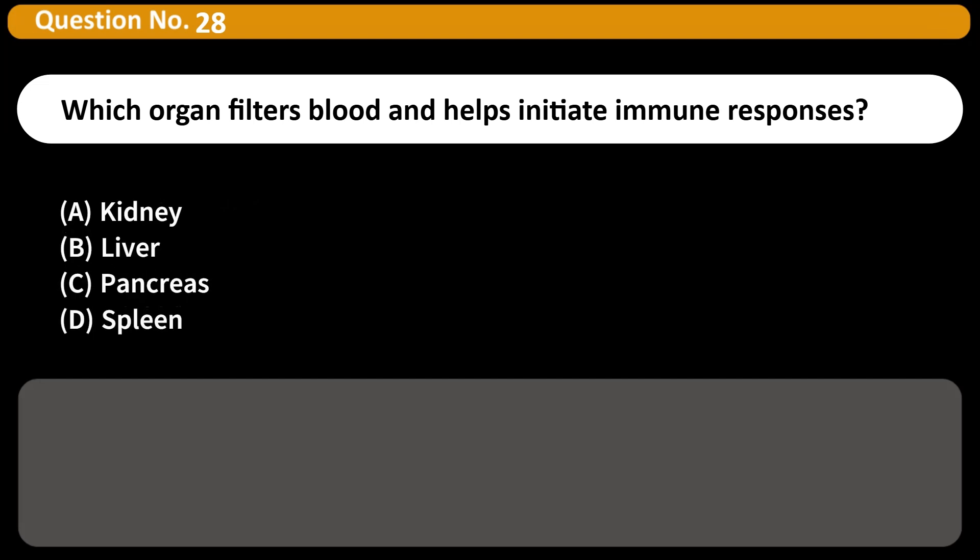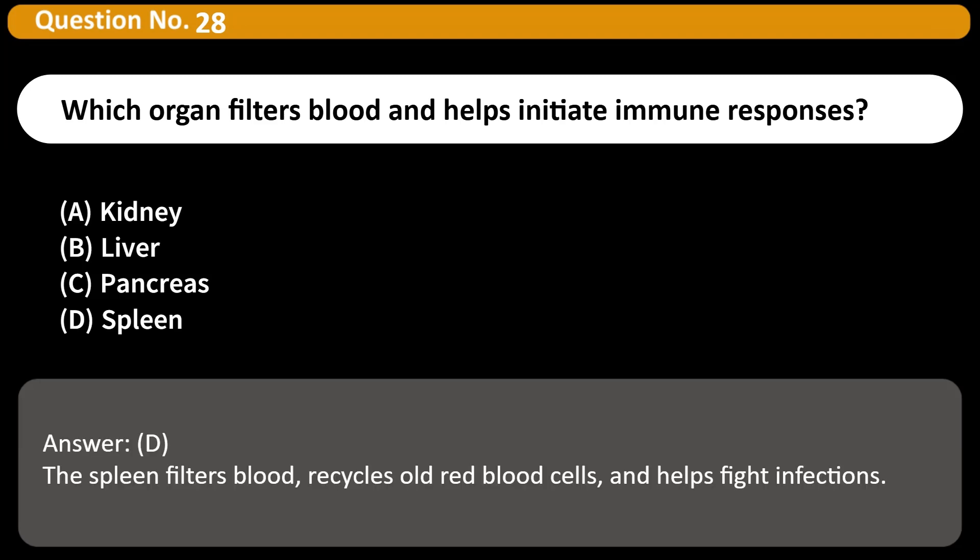Which organ filters blood and helps initiate immune responses? A) Kidney, B) Liver, C) Pancreas, D) Spleen. Answer: D. The spleen filters blood, recycles old red blood cells, and helps fight infections.